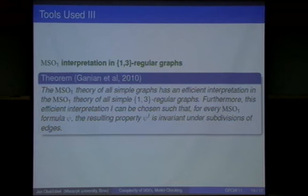The third tool we use is MSO1 interpretation. This is a theorem we used in our previous paper: if you have MSO1 theory of a simple graph, you can efficiently interpret it in MSO1 theory of a simple 1,3-regular graph. You really constrain the structure of the graph. The interpretation is very nice because it's actually invariant on the subdivision of edges. You can play with the graph a lot and still have the interpretation working.